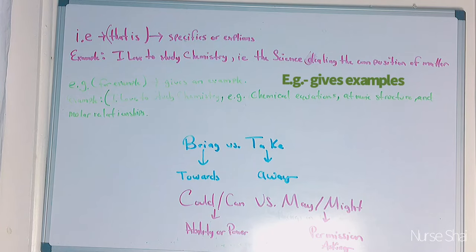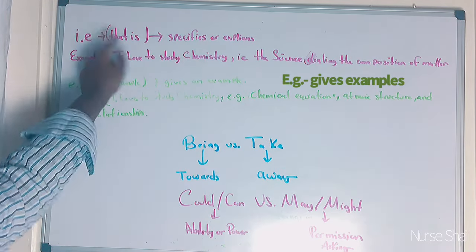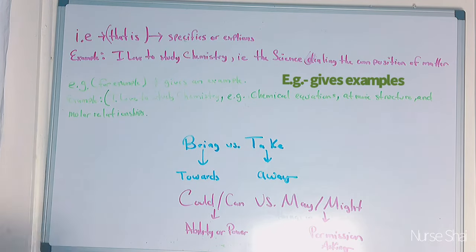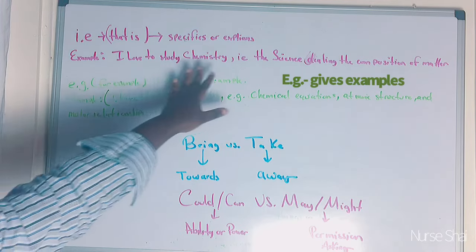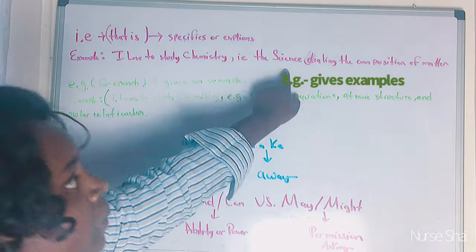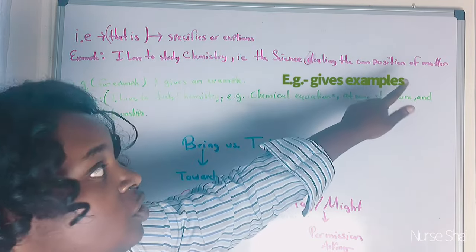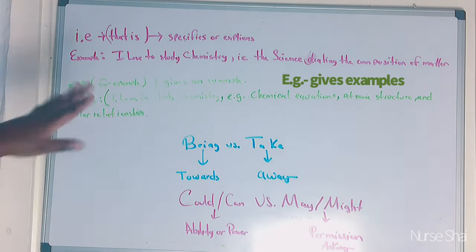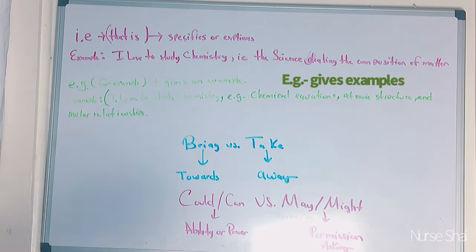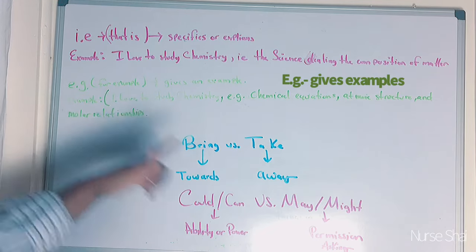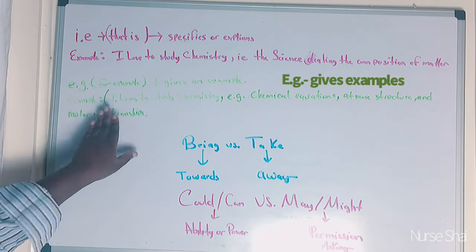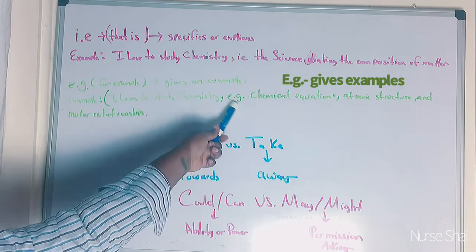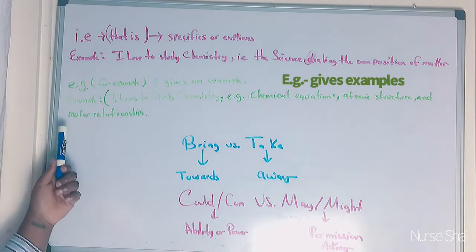I.e. means 'that is' — it specifies or explains information further. An example: 'I love to study chemistry, i.e., chemistry is the science dealing with the composition of matter.' E.g. means 'for example.' An example: 'I love to study chemistry, e.g., chemistry equations, molecular structure and molar relationships' — it gives examples of the different chapters involving chemistry.